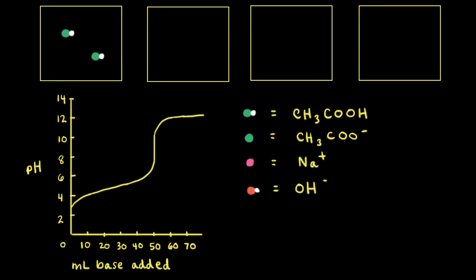Next, let's look at the titration curve for our weak acid–strong base titration. pH is on the y-axis, and since we're adding our strong base to our solution of weak acid, milliliters of base added is on the x-axis. We'll use particulate diagrams to help understand what's happening; water molecules will be left out for clarity.